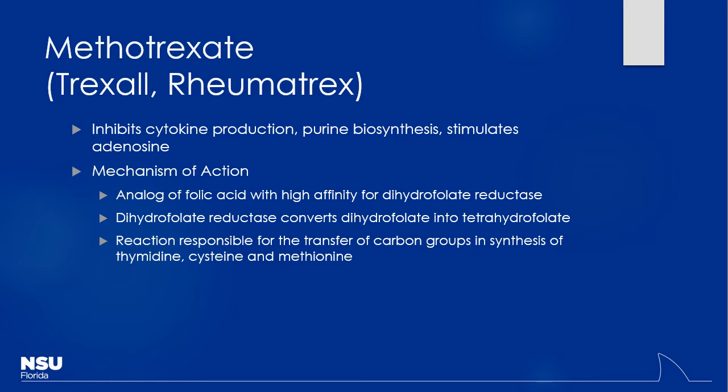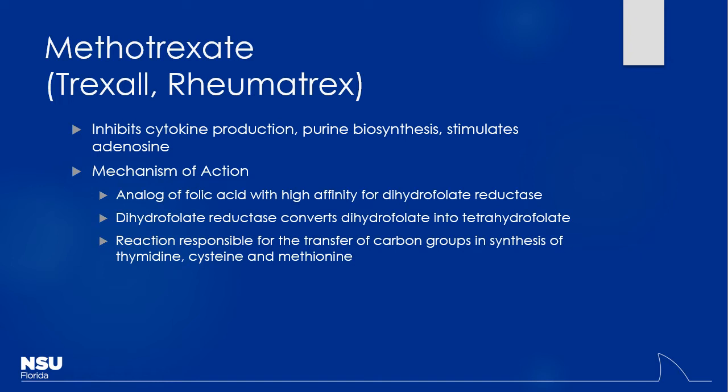Getting into the first drug — methotrexate. How does it work? It's a dihydrofolate reductase antagonist — or simply put, a folic acid antagonist. It prevents cells from using folic acid effectively, so they cannot produce purines, cannot produce new DNA, and thus inhibits cellular replication. What kind of cells get affected most quickly? Rapidly dividing cells — your immune cells, hair cells, GI cells. We already know a lot of the side effects because we looked at it for cancer treatment and inflammatory bowel disease. The drug hasn't changed — we're just using it for a different disease state.